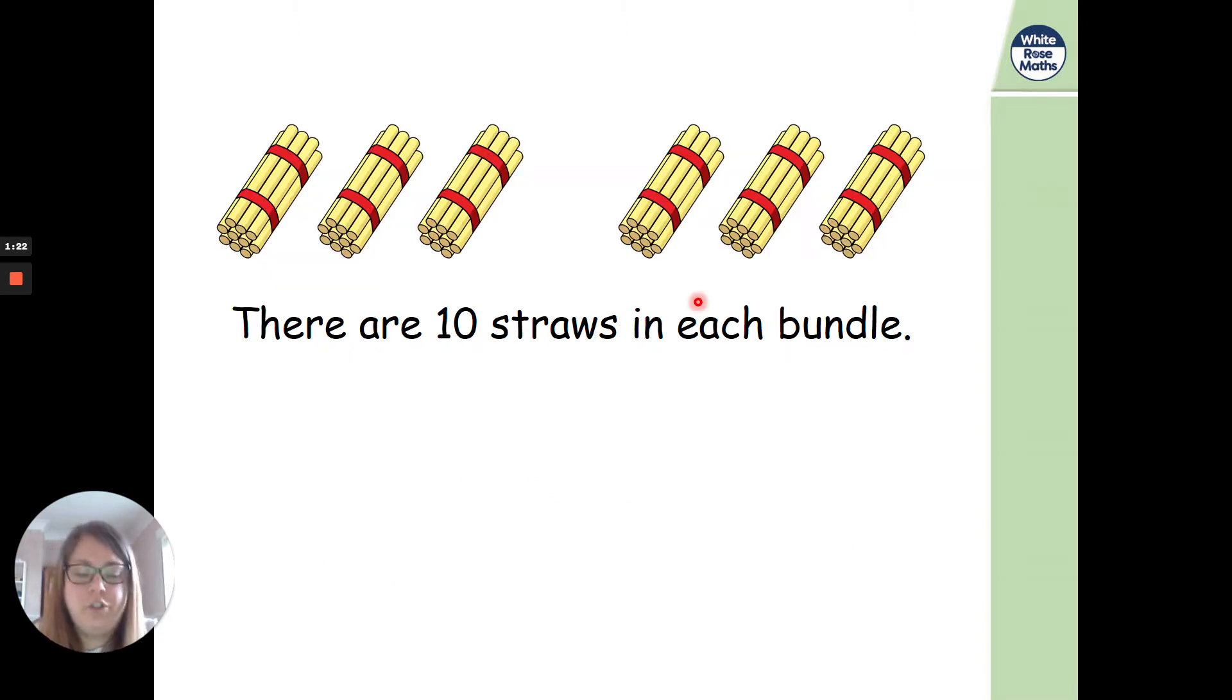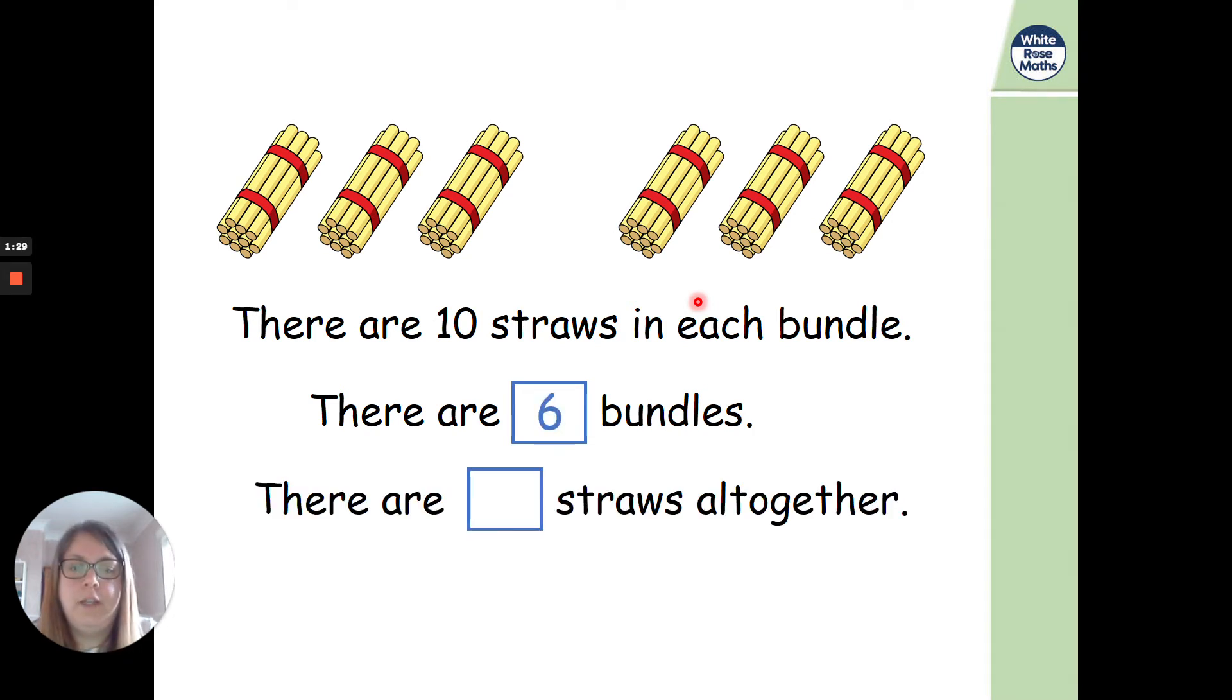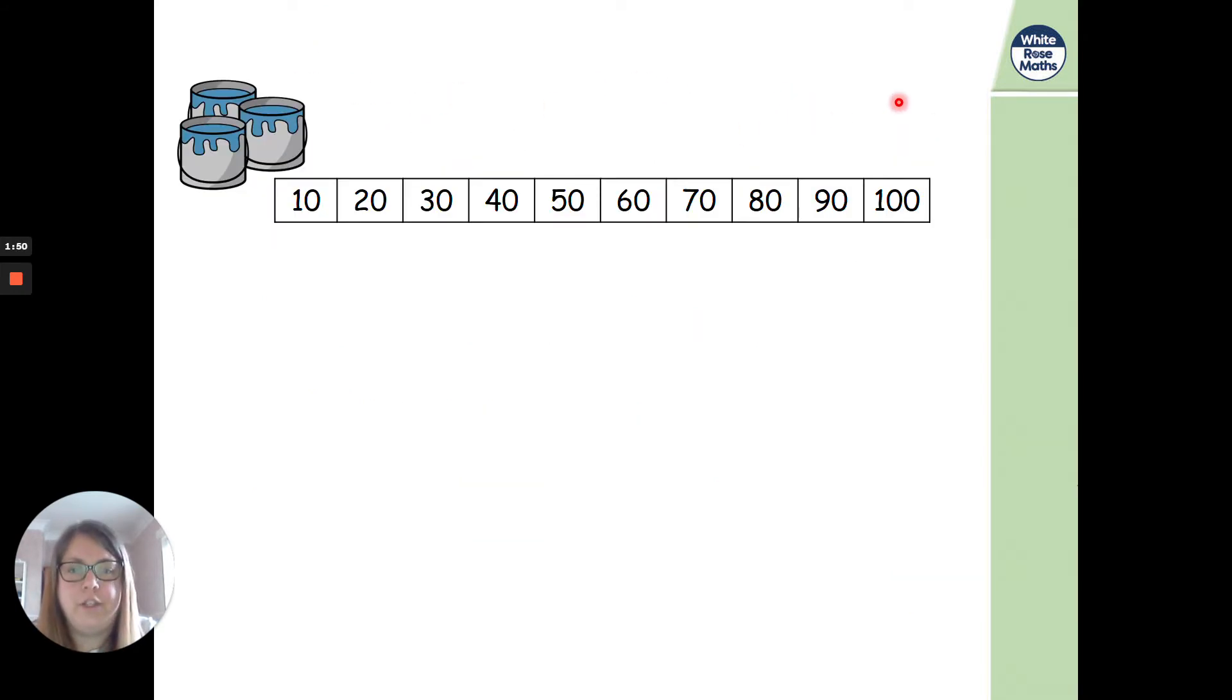So there are 10 straws in each bundle. How many bundles do we have? We've got 6 bundles. How many straws are there altogether? So again, we don't need to count each individual straw, do we? We need to count in 10s. Hopefully you're saying that. So off you go. 6 lots of 10 or 6 times 10 is? It is 60, isn't it? 10, 20, 30, 40, 50, 60. Well done if you managed to do that.